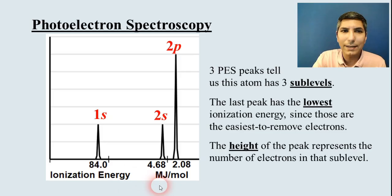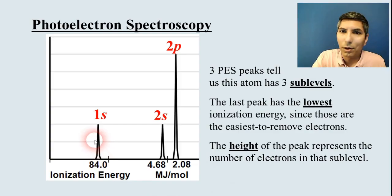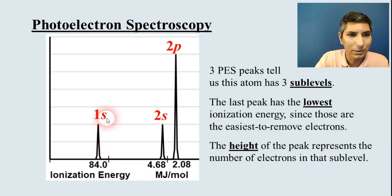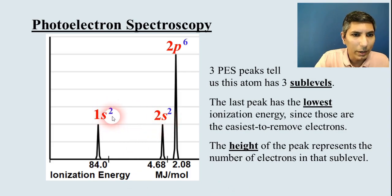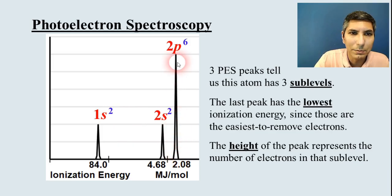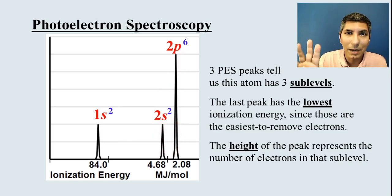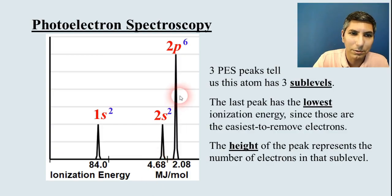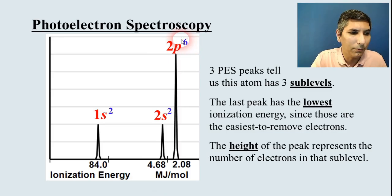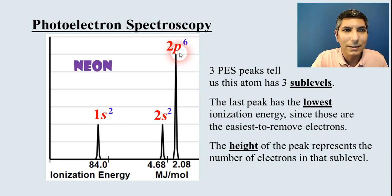The height of each peak corresponds to the number of electrons in the sub-level. We know 1s has a maximum of two electrons, so we label it 1s2, 2s2. But this last peak — notice that it is three times taller than the other peaks. That means it has three times as many electrons, so we can safely say this is 2p6. If you match this up on your periodic table, you can see that this is neon — the atom that has this electron configuration.